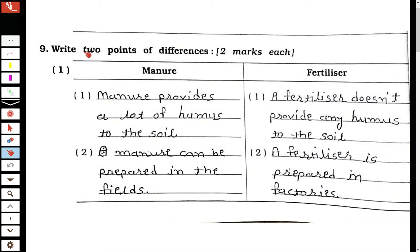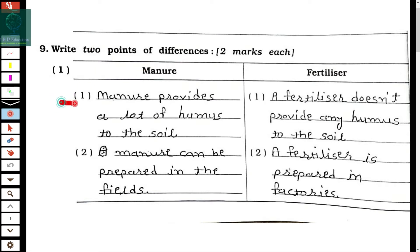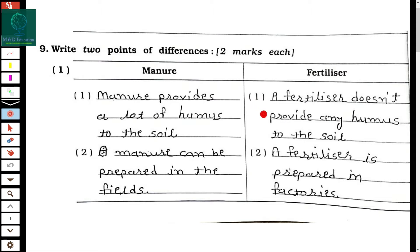Main question number 9: write two points of differences. The first comparison is manure and fertilizer. The first point is manure provides a lot of humus to the soil while fertilizer doesn't provide any humus to the soil. The second point is manure can be prepared in the fields, while fertilizer is manufactured in factories.